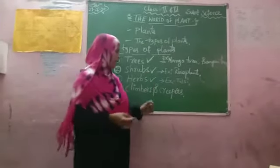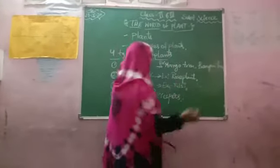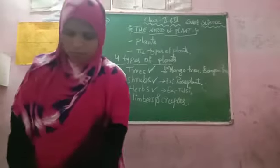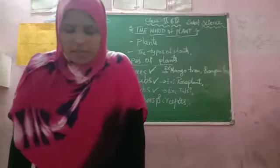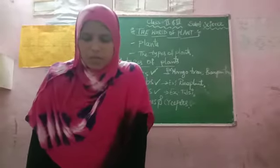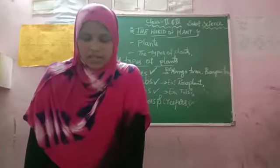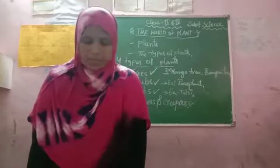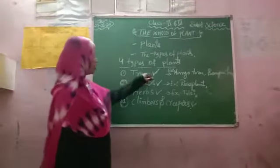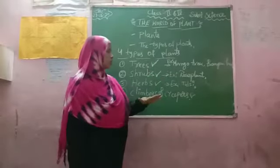Next are climbers and creepers. Some plants have a weak stem and cannot stand straight. They need support to stand and grow. Such plants are called climbers. For example, money plant. Some plants spread along the ground — these are creepers.